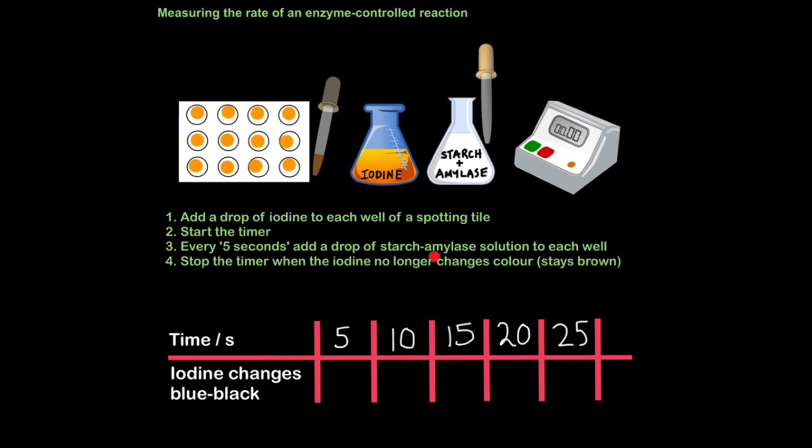Every 5 seconds add a drop of starch amylase solution to each well. So let's say the first 5 seconds have passed and I've dropped some starch amylase solution onto the first well. When starch reacts with iodine it turns a blue blackish colour. Remember that amylase helps break down starch so at the moment it hasn't broken down the starch which is why we can still detect it using iodine. So after the first 5 seconds the iodine did change to a blueish blackish colour. Now 10 seconds have passed. And once again we have the colour change. So we continue every 5 seconds we're doing this. And once again we see the colour change. So now 20 seconds have passed, but this time we get no colour change.